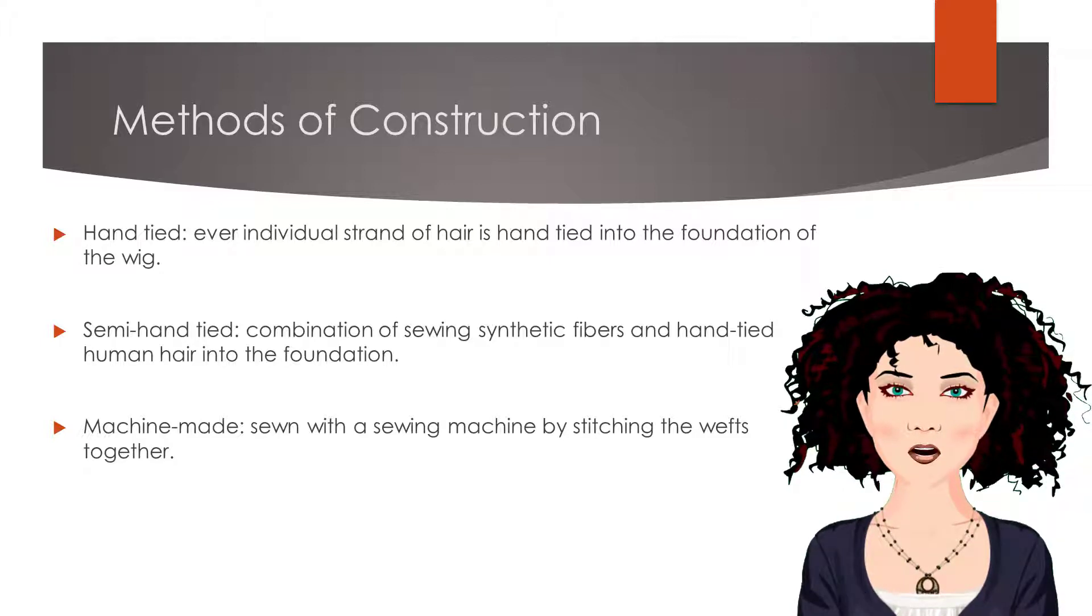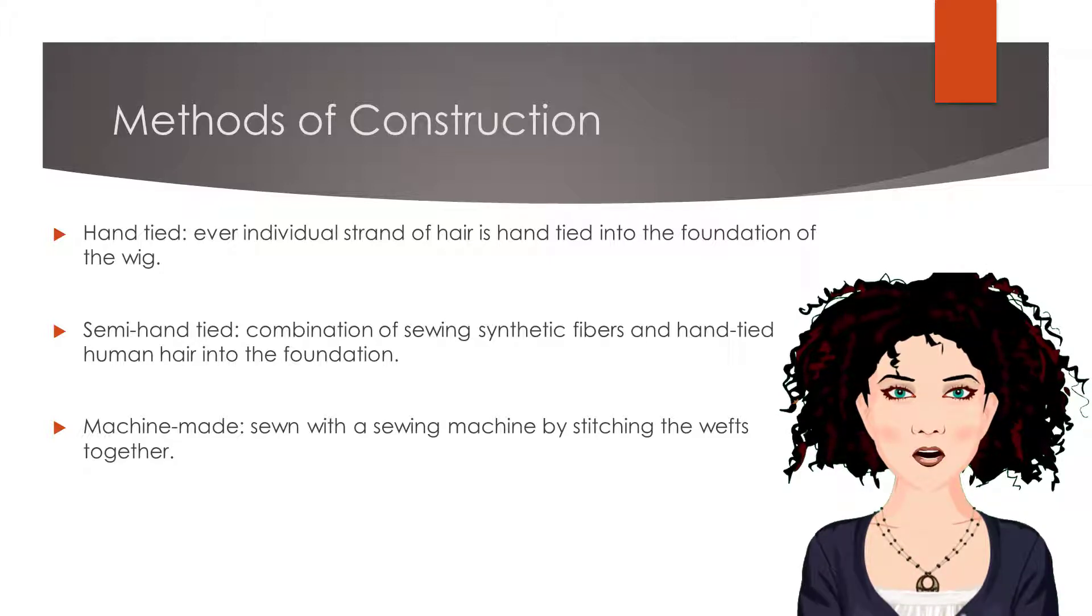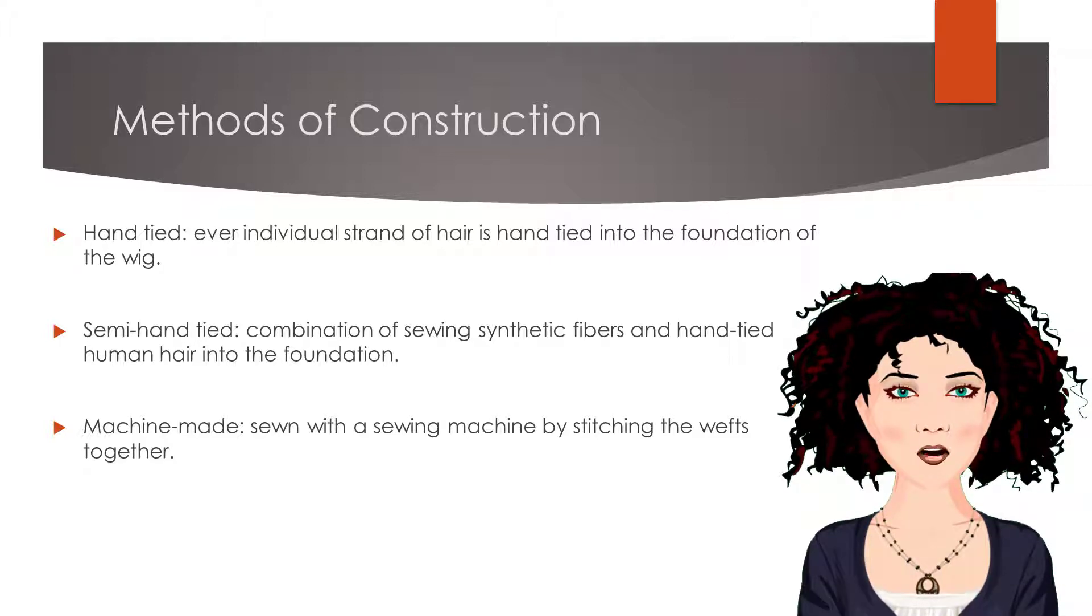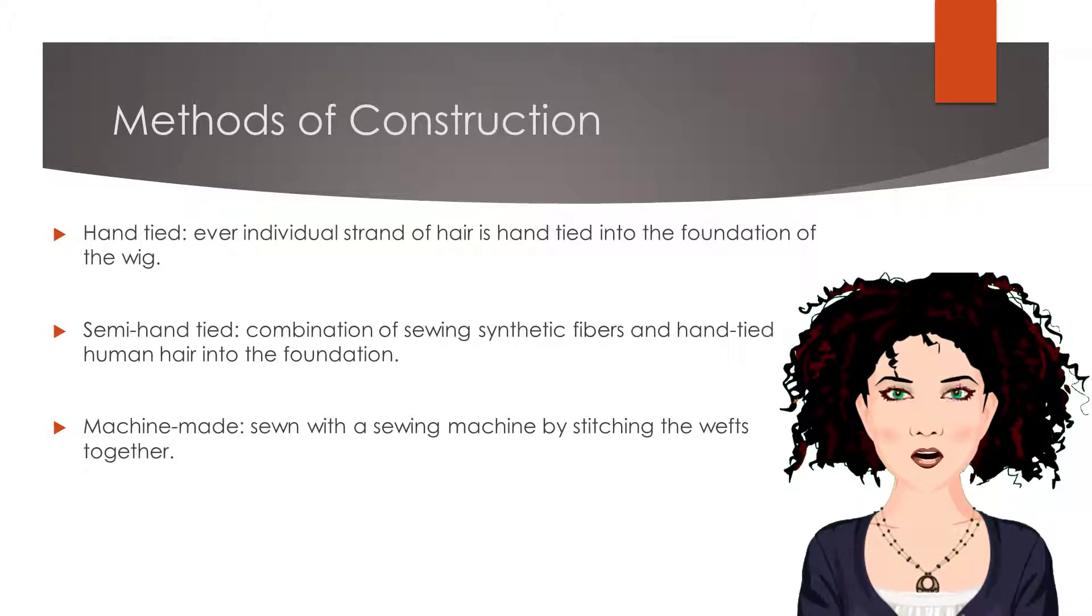The process for tying each strand of hair is quite tedious and time-consuming. The second construction method is called semi-hand tied, meaning the wig is a combination of machine sewing and hand tying hair into the wig's foundation.